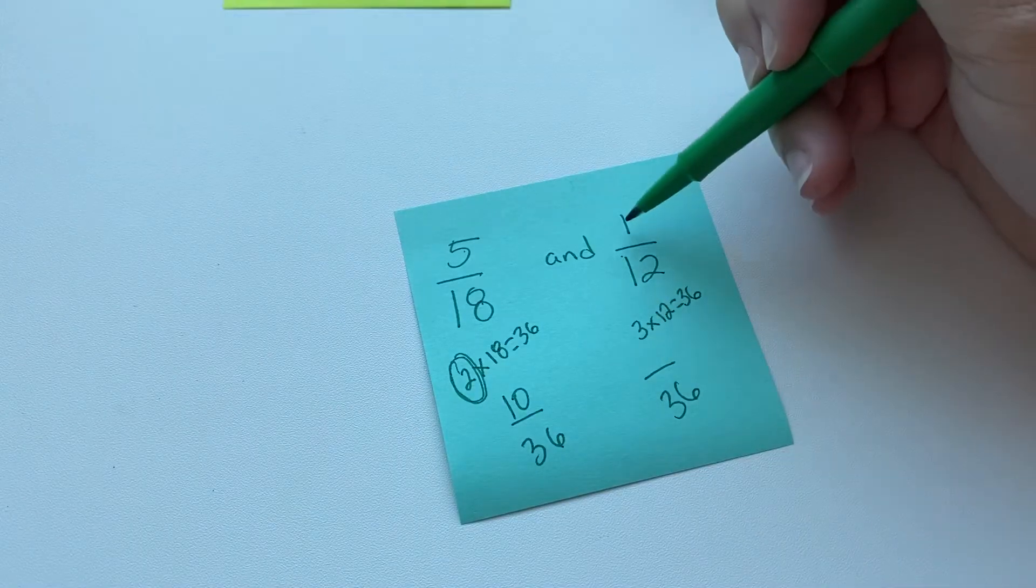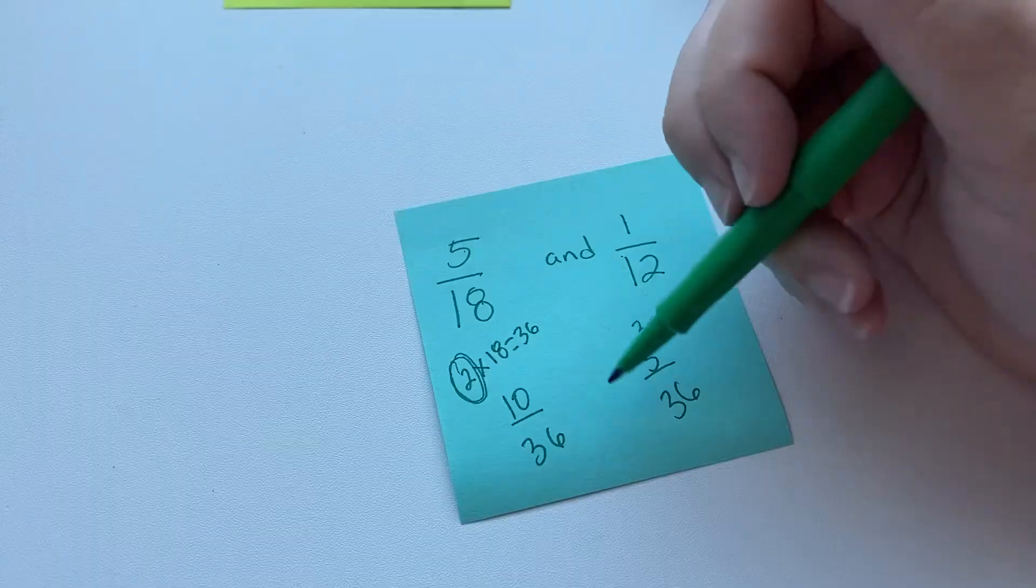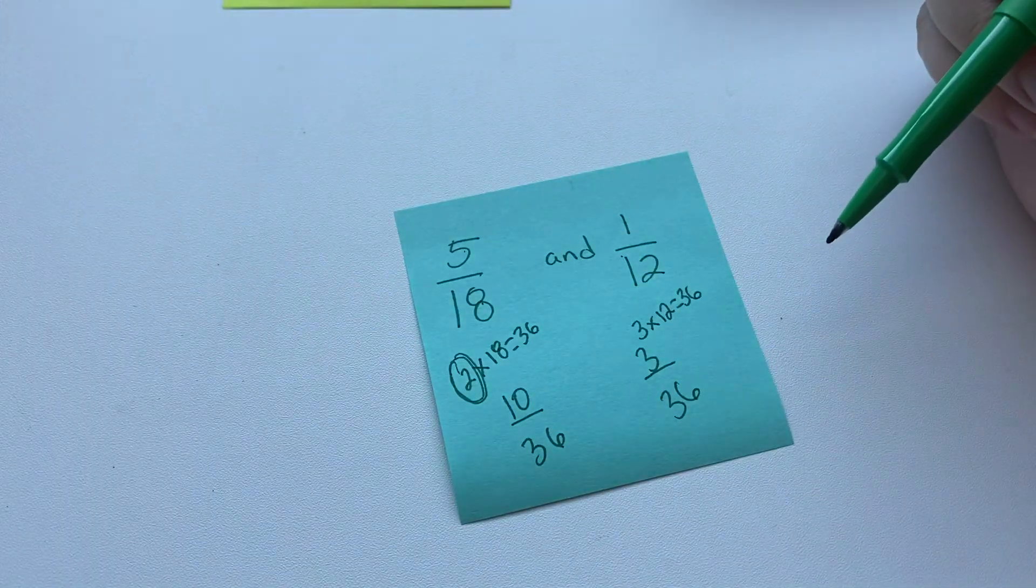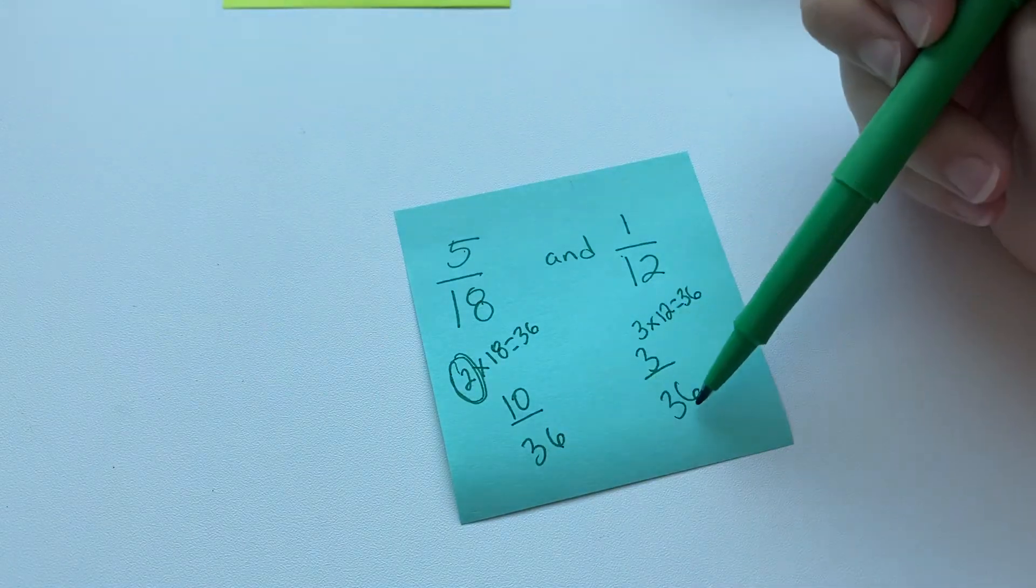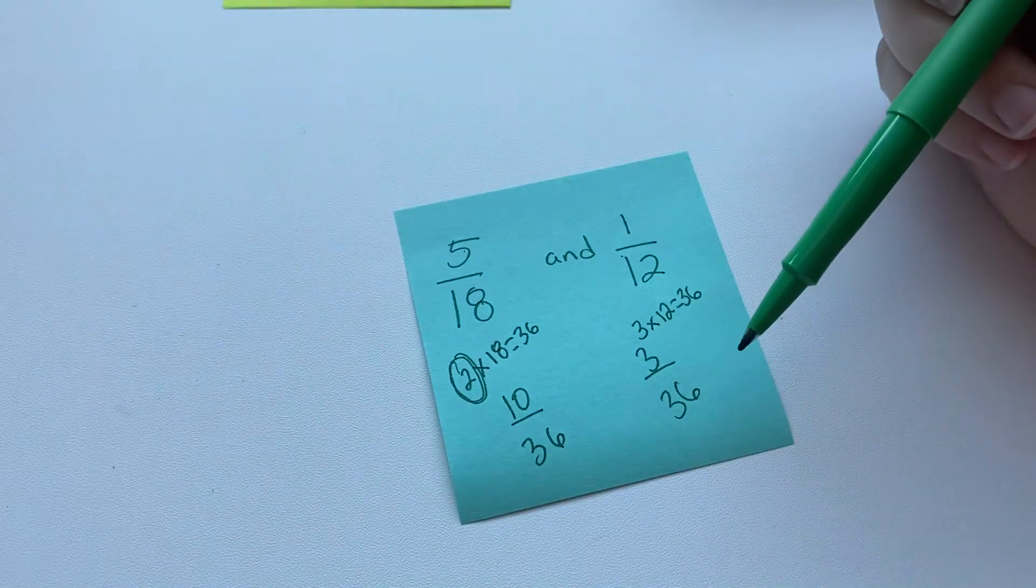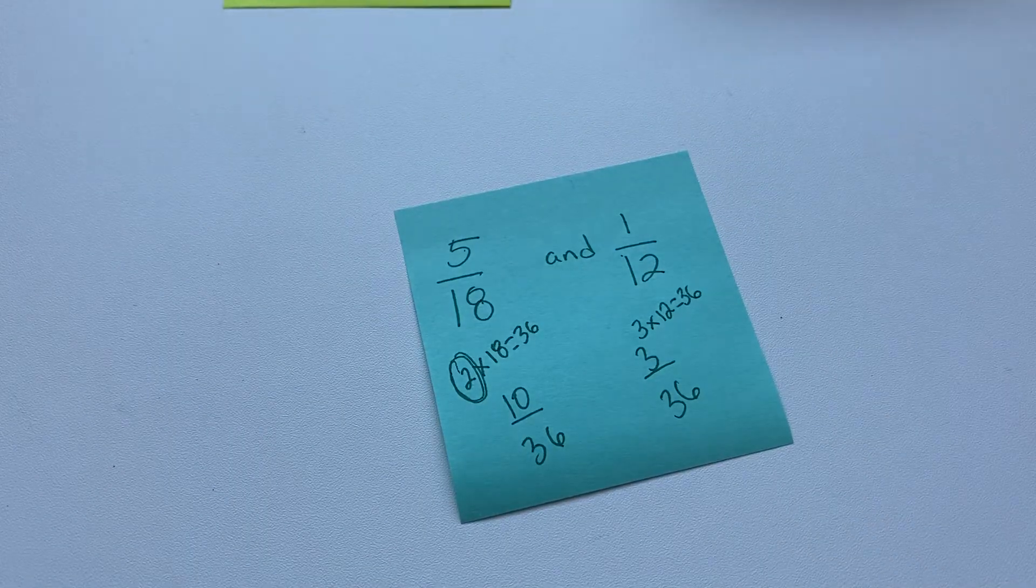And we multiplied 12 by 3, so we're going to multiply 1 by 3. And we get 3. And now we have these two fractions that have common denominators, which makes them a lot easier to work with. And having a 36 as the denominator is a lot easier than 18 times 12. So that's why we would use this method.